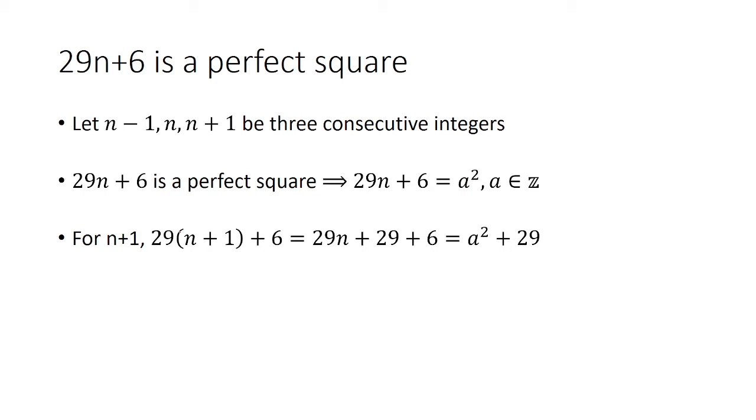Now we'll consider n+1. If we plug in n+1 for n, we have 29(n+1) + 6, which when we distribute the 29 gives us 29n + 29 + 6. Note that 29n + 6 is a², so this becomes a² + 29.